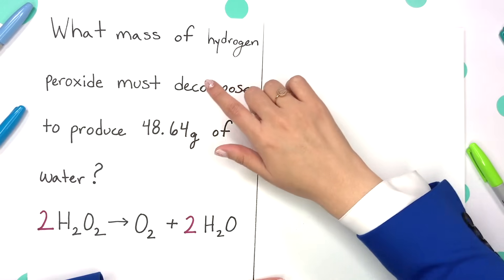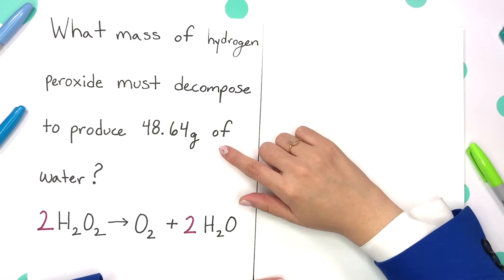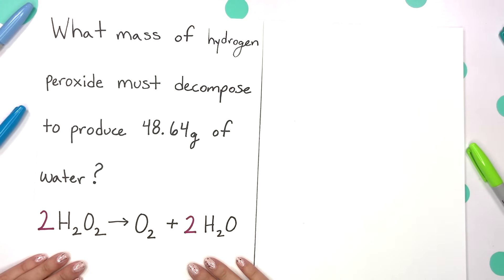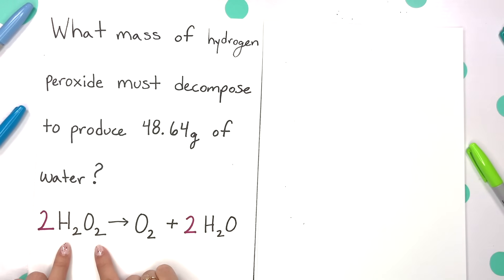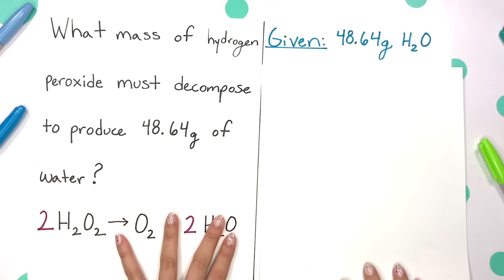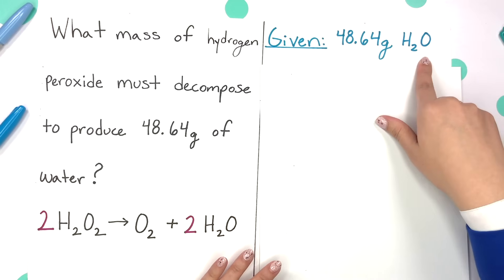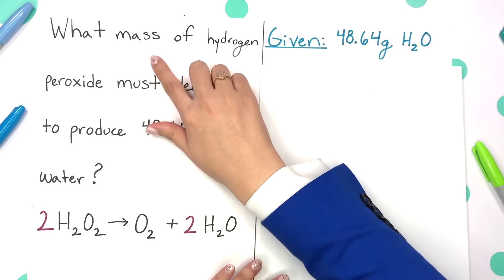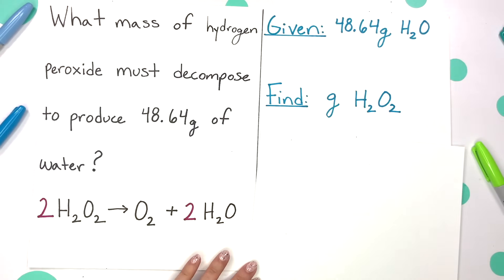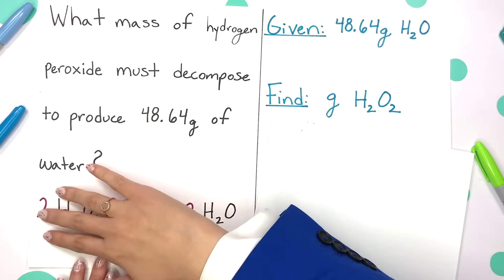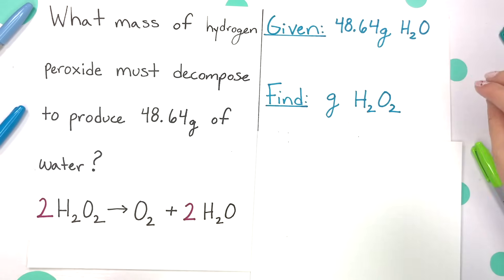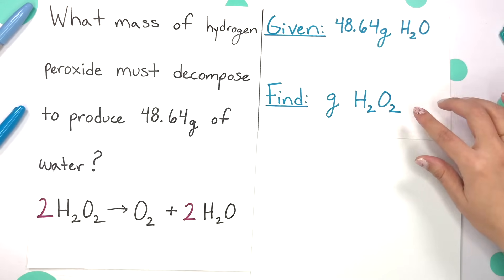What mass of hydrogen peroxide must decompose to produce 48.64 grams of water? We're given our balanced equation. Hydrogen peroxide is H2O2. So what we're given is 48.64 grams of water, and we're asked to find our mass — or grams — of hydrogen peroxide, which is H2O2.